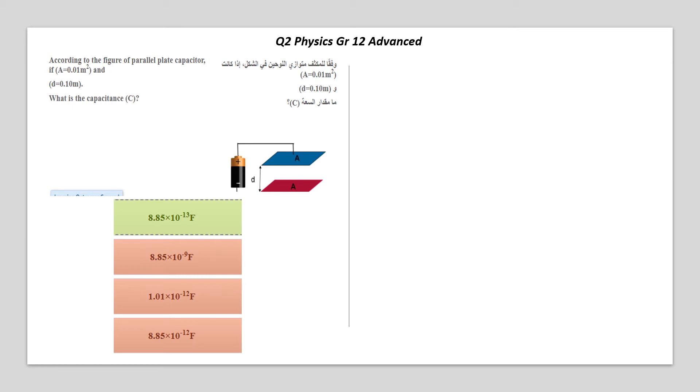So here we are with question 2 for grade 12 advanced. According to the figure of parallel plate capacitor, if the area is 0.01 meter square and the distance between the plates is 0.1, what is the capacitance?